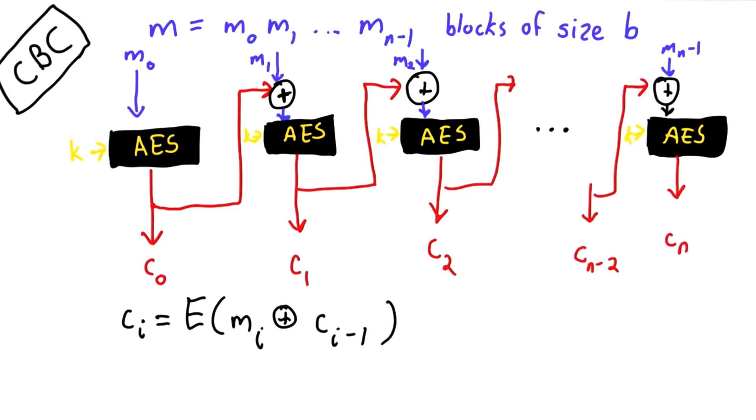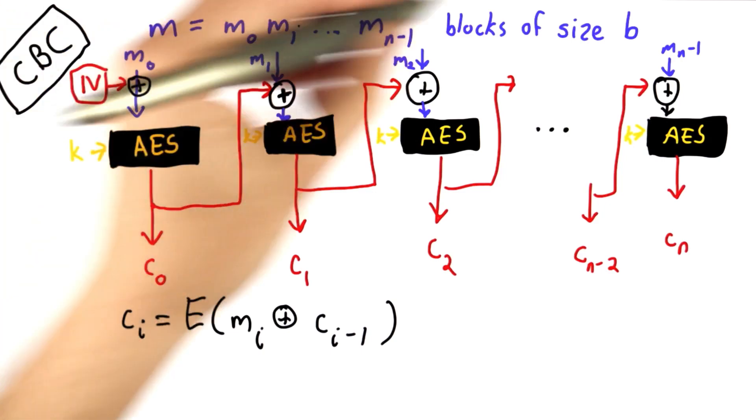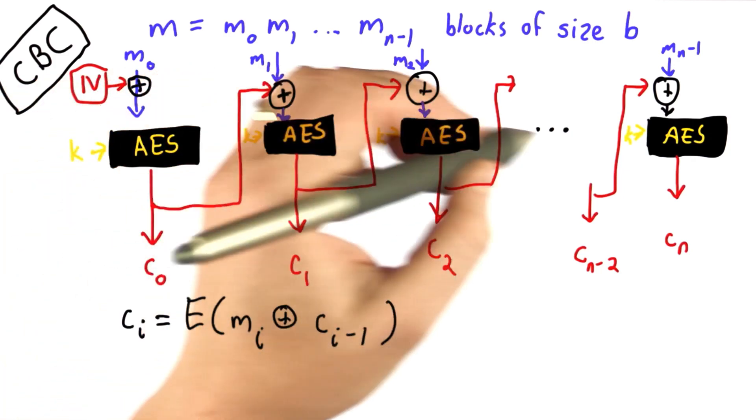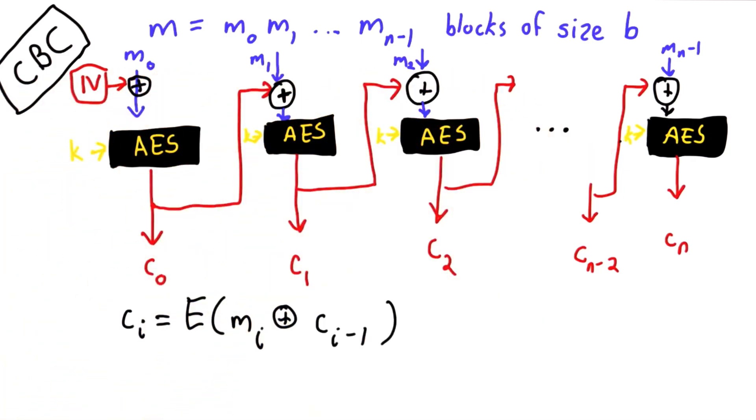We're going to add what's called an initialization vector, and we'll XOR that with the first message. That keeps things consistent. Each message is being XORed with something before it's encrypted. And this might worry us that we're adding more secrets. We want to minimize the number of secrets to be as few as possible. The IV doesn't really need to be kept secret.